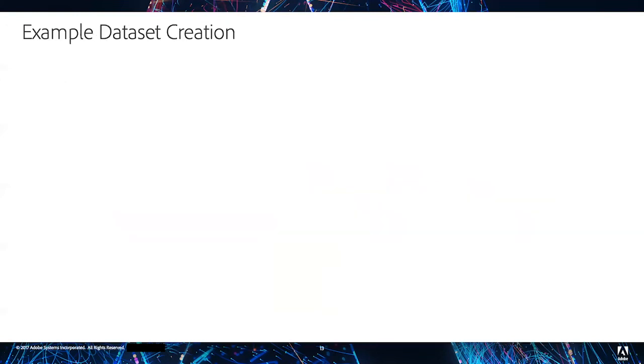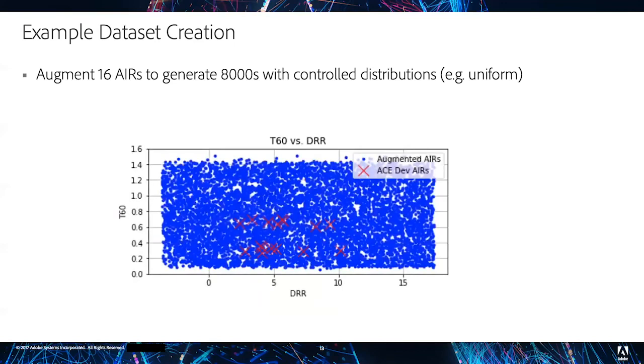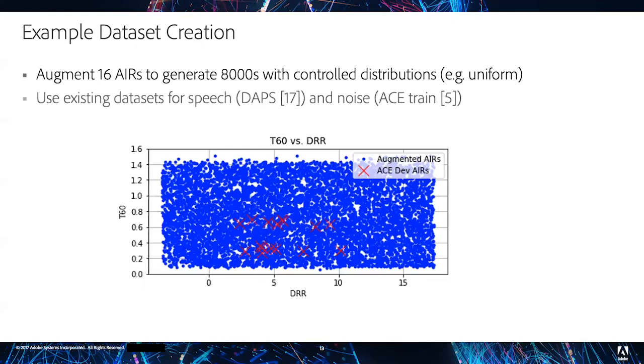To really show the benefit of our AIRA approach, we can create an example training dataset. Specifically, we choose a small set of 16 real measured IRs and augment each 500 times, resulting in a total set of 8,000 IRs with a uniform distribution across T60 and DRR. We then convolve random combinations of speech with the IRs and add in noise to create a final dataset of over 100,000 four-second training samples.